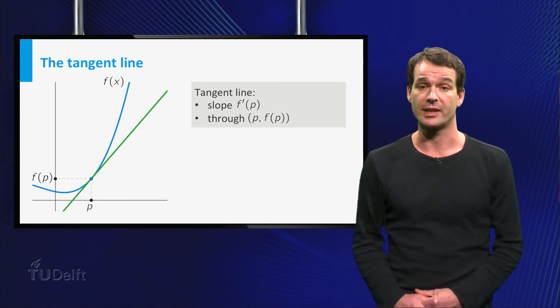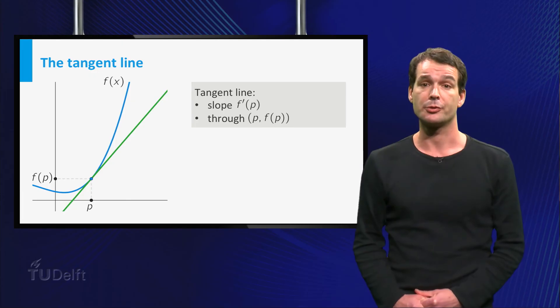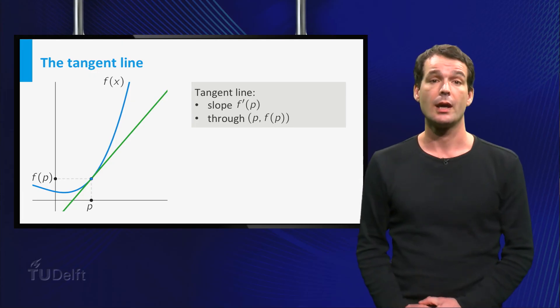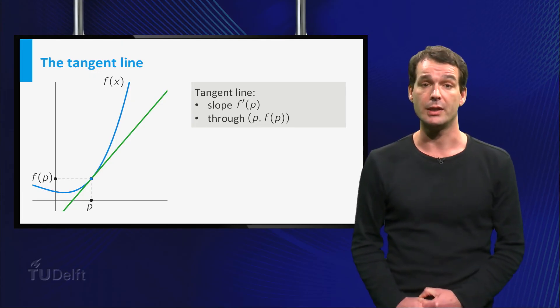We know two properties of the tangent line. Its slope is equal to the derivative of f at p, and it goes through the point.